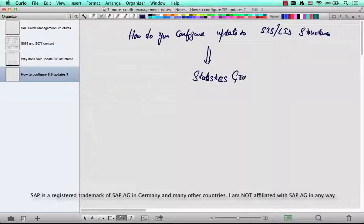Statistics group. So what is the statistics group and where is it? The statistics group is at four or five different places. In sales, the customer master has a statistics group, the material master has a statistics group,